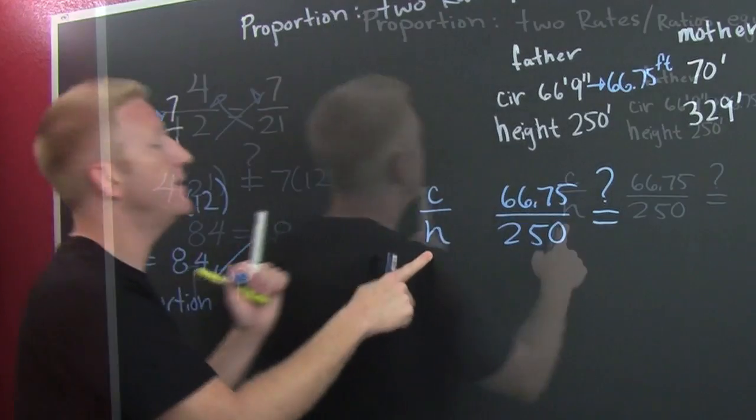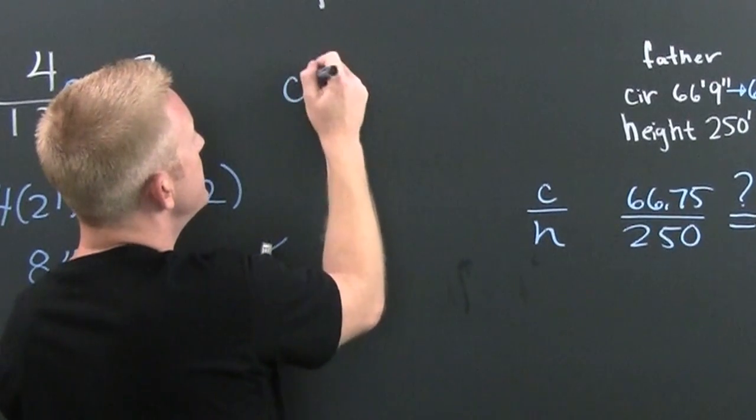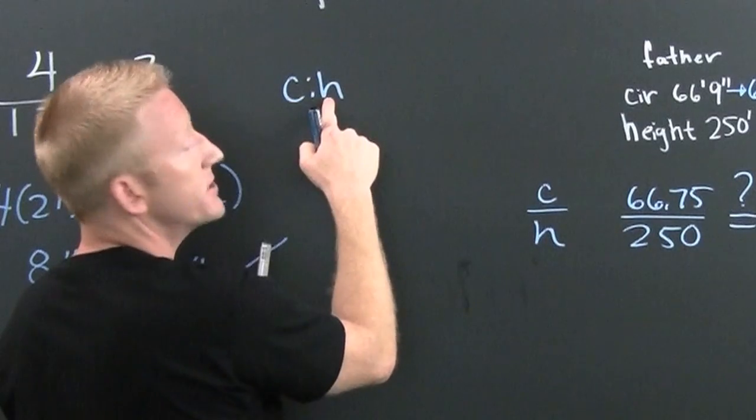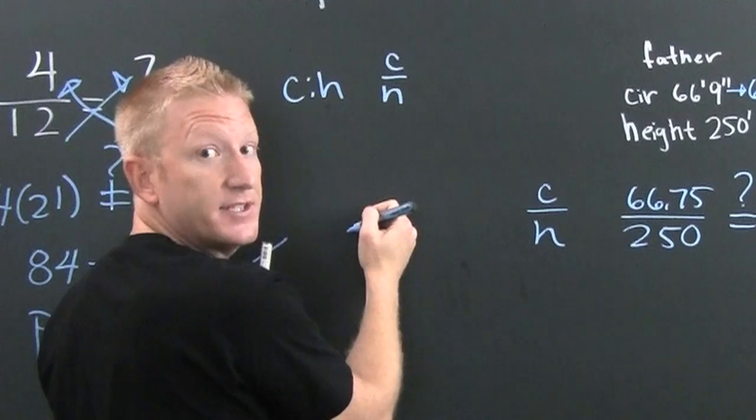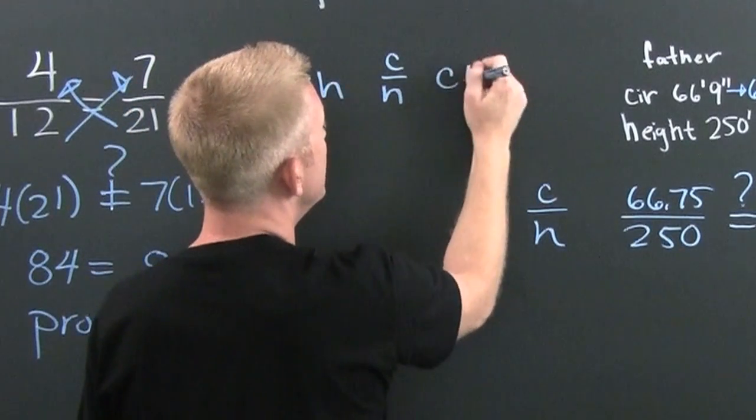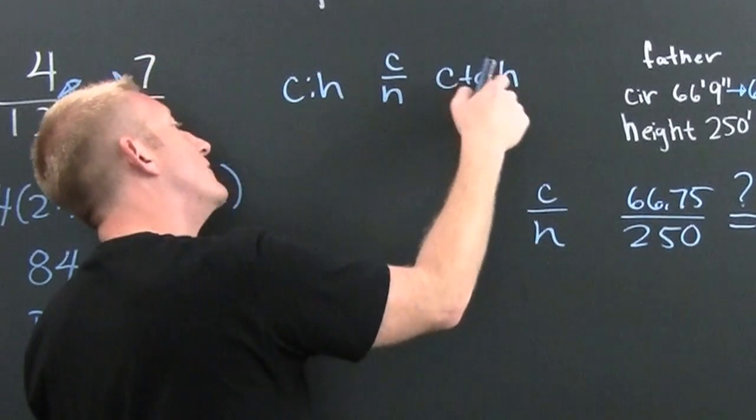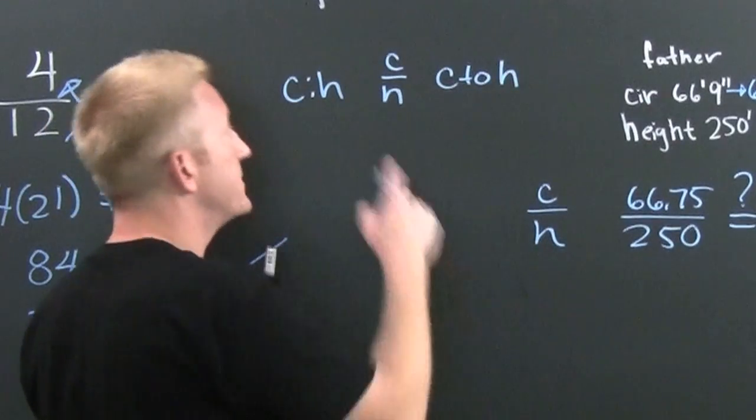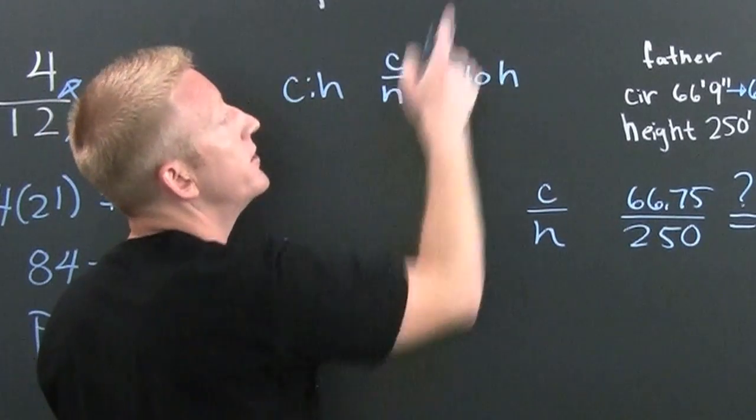I might mention that you could see these several different ways. You can see this as C to H. That's circumference to height. You can also see it as C to H, or you could see it as C to H. Circumference on top, height on bottom. And that's how you could write your ratios.